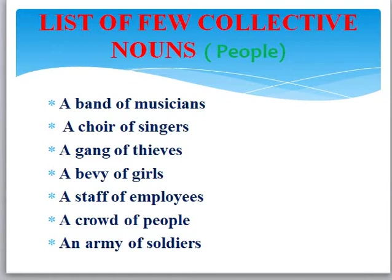A choir of singers. If I say 'the choir sang beautifully in the morning assembly', as soon as I say that you would understand that I am talking about the choir — the collective noun is choir, only choir. A gang of thieves: 'The police chased the gang and caught them.' Gang is the collective noun for robbers or thieves. A bevy of girls. A staff of employees — employees are the people who work in a place, so a lot of them together we give them one name: staff. Sometimes you hear on the PA system in school that there is a staff meeting — that means all the teachers and people who work in your school are staff. Staff is a collective noun.